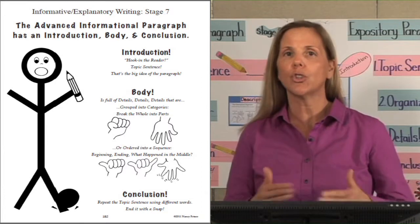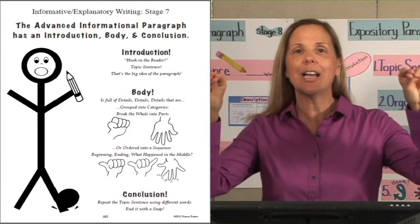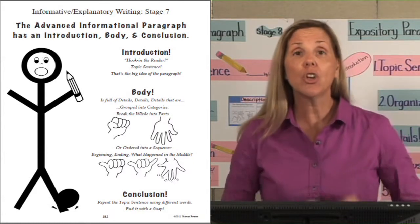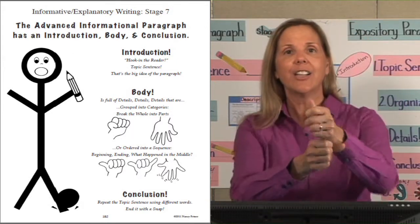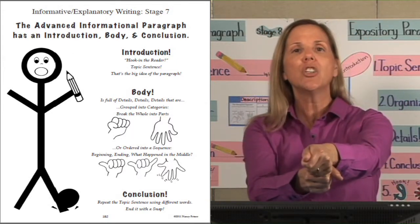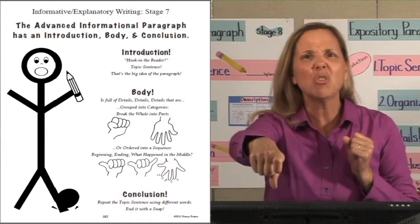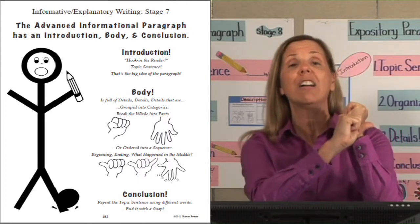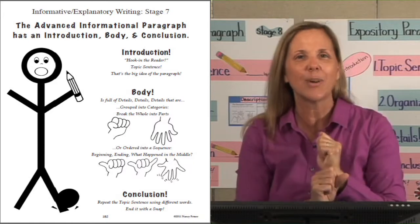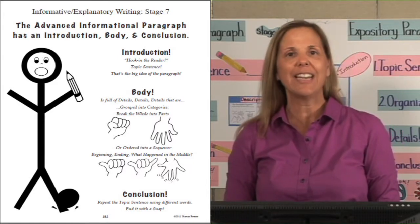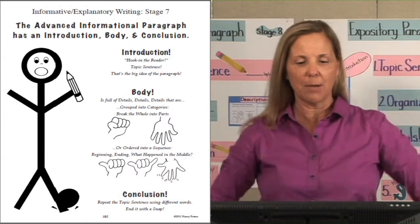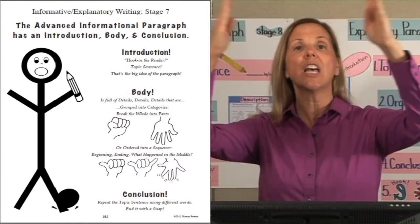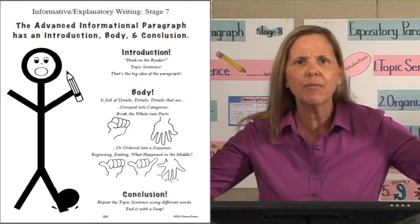In the introduction, we don't want to bore our audience. So what are we going to do? We're going to hook in the reader—just like when you go fishing, you need to hook the fish with a nice juicy worm. We're going to interest the reader by hooking them in with something interesting and juicy. Our advanced paragraph has an introduction, a body, and a conclusion. In the introduction, we hook in the reader, then introduce the topic sentence—that's what all the information is about.